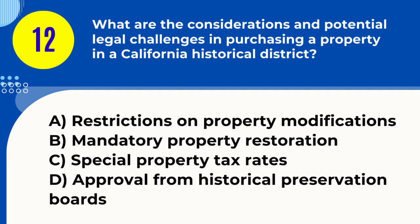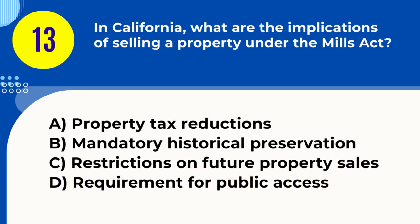Question 12. What are the considerations and potential legal challenges in purchasing a property in a California historical district? A. Restrictions on property modifications B. Mandatory property restoration C. Special property tax rates D. Approval from historical preservation boards. Answer: D. Approval from historical preservation boards. Explanation: Purchasing property in a historical district often requires approval from preservation boards for any modifications, posing legal challenges.